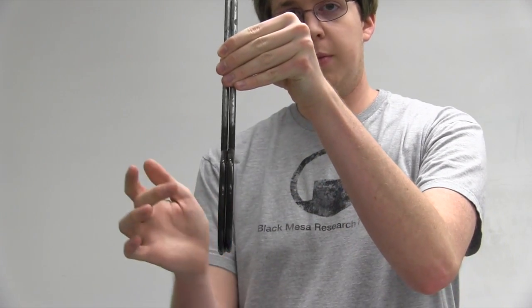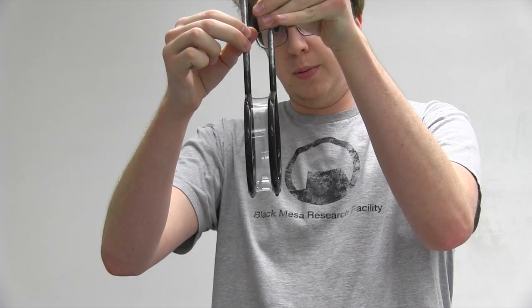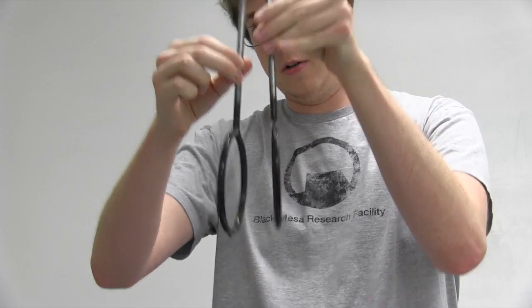So the first system is one that we discussed in class, which is when you take two rings, pop the membrane in the middle, and spread them apart to make a catenary curve, like that.